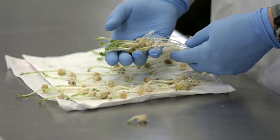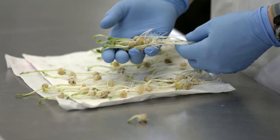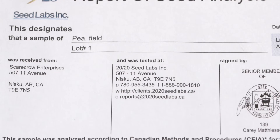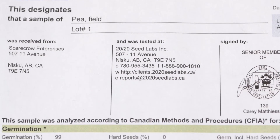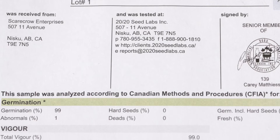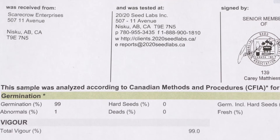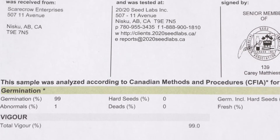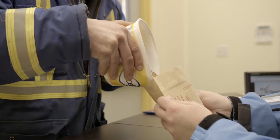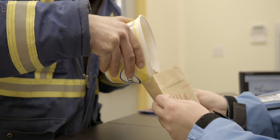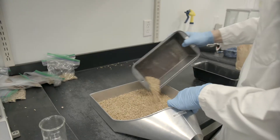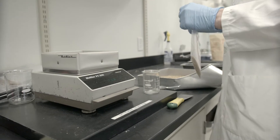Germination, as determined by normal healthy seedlings, is the maximum performance potential of your seedlot, and it is reported as a final percentage on the report of seed analysis. Testing immediately after harvest is crucial, because your seed analyst can determine the full potential of your seedlot.